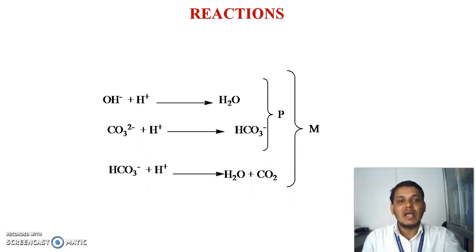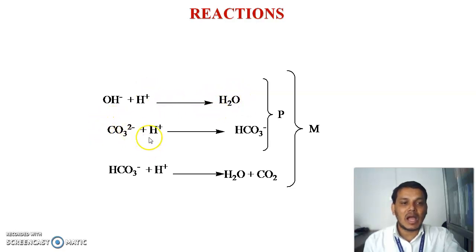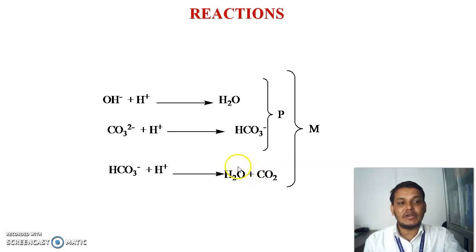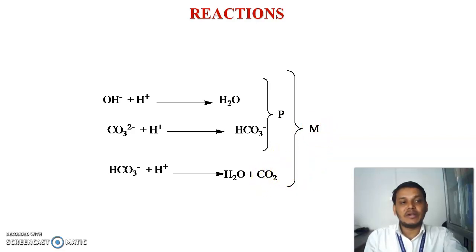The reactions are as follows: hydroxide plus H⁺ converts to H₂O. Then carbonate plus H⁺ converts to bicarbonate — this is the phenolphthalein alkalinity stage, representing complete neutralization of hydroxide and one-half neutralization of carbonate. In the next stage, bicarbonate plus H⁺ converts to H₂O plus CO₂. The methyl orange end point, where yellow changes to orange-red, represents complete neutralization of hydroxide, carbonate, and bicarbonate.